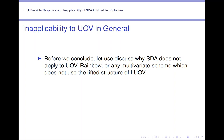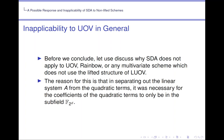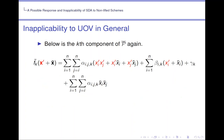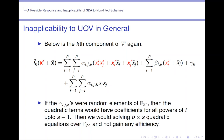Before we conclude, let us discuss why SDA does not apply to UOV, Rainbow, or any multivariate scheme which does not use the lifted structure of LUOV. The reason for this is that in splitting out the linear system A from the quadratic terms, it was necessary for the coefficients of the quadratic terms to only be in the subfield F_{2^d}. Below is the kth component of P̄ again. And we see that if the alphas were random elements of F_{2^r}, then the quadratic terms have coefficients for all powers of T, up to s minus 1. Then we would be solving o times s quadratic equations over F_{2^d}, and not gain any efficiency.